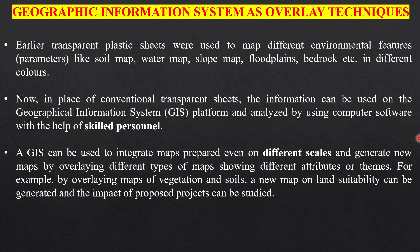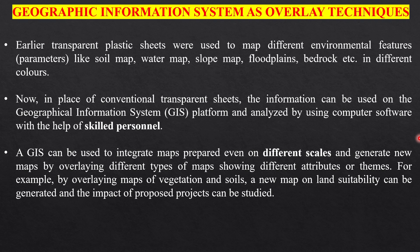Earlier, transparent plastic sheets were used to map different environmental features like soil map, water map, slope map, flat plains, etc., in different colors. Now, in place of conventional transparent sheets, the information can be used on a Geographic Information System — a GIS platform — and analyzed using computer software with the help of skilled personnel. A GIS can be used to integrate maps prepared even on different scales and generate new maps by overlaying different types of maps showing different attributes or themes.